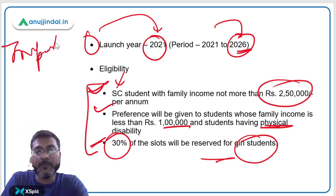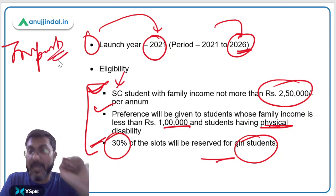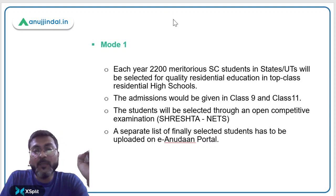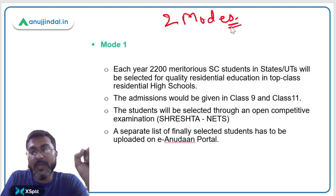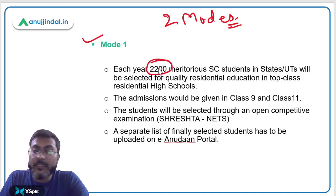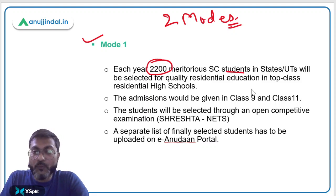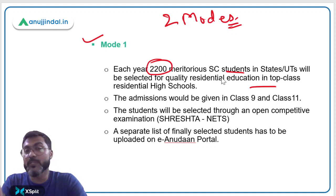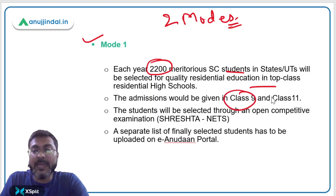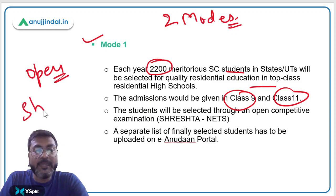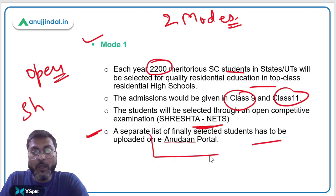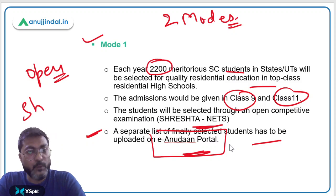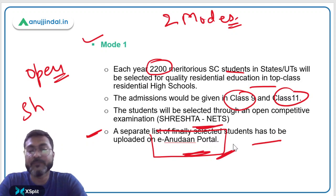This is a very important scheme for the RBI Grade B exam. The scheme is implemented in two modes. Mode 1: each year, 2,200 meritorious SC students from all states and UTs are selected for quality residential education in top-class residential high schools. Admission is given in Class 9th and 11th through an open competitive examination called SHRESHTA-NET. A separate list of finally selected students is uploaded on the Vidya Anudan portal.